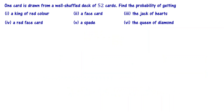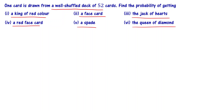One card is drawn from a well-shuffled deck of 52 cards. Find the probability of getting: a king of red color, a face card, the jack of hearts, a red face card, a spade, the queen of diamond. If you look at a well-shuffled deck of 52 cards, what is the probability of getting all these?